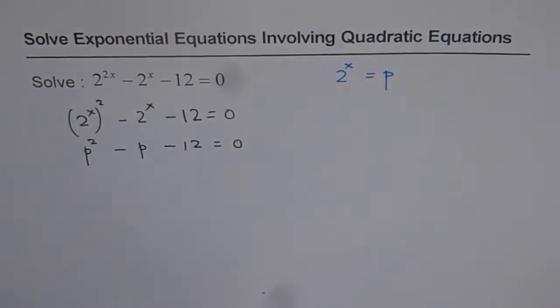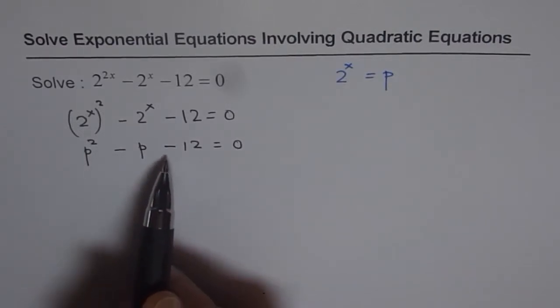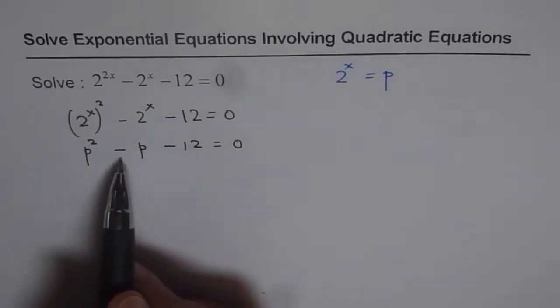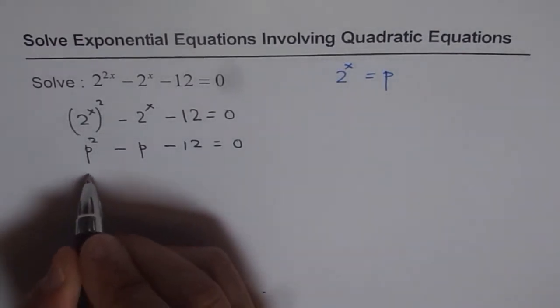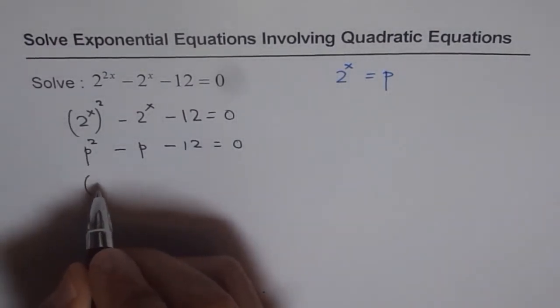Now, that is a quadratic equation. So now I can always factor and solve this. I am looking for two numbers whose product is minus 12 and sum is minus 1. So the numbers are minus 4 and plus 3.